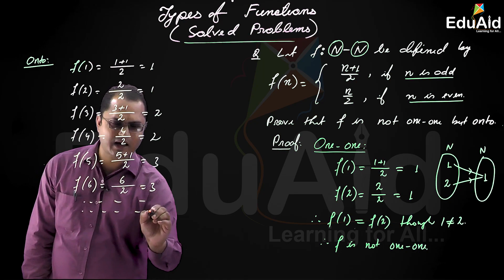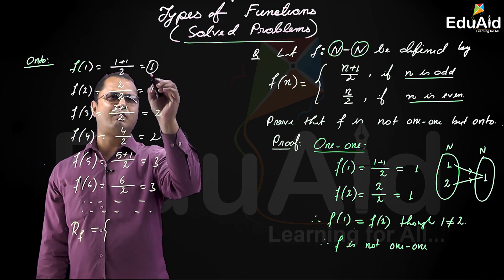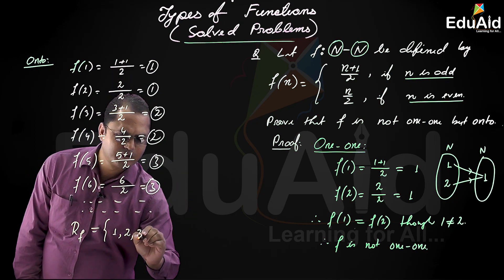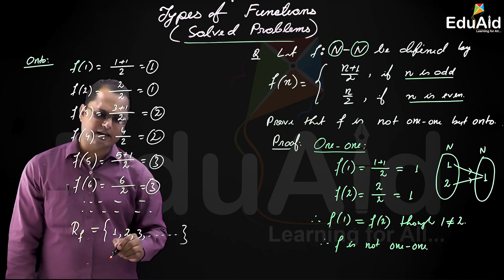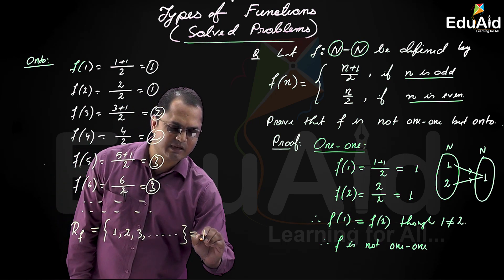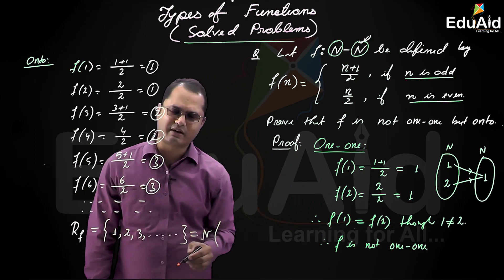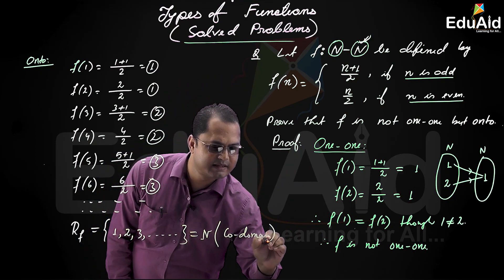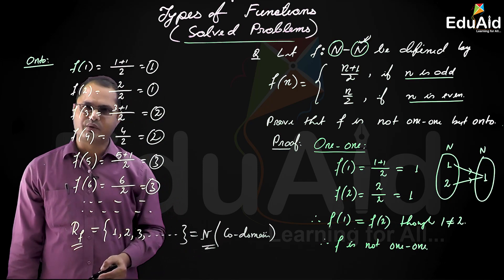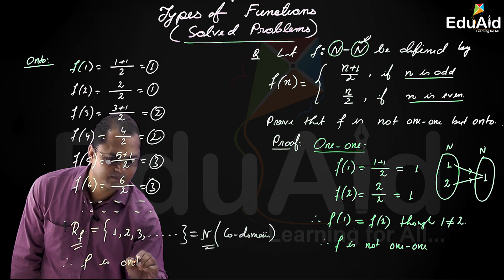The range of f means the set of all images, which is {1, 2, 3, ...} — without missing any natural number, we get the set of natural numbers again. So range of f equals the set of natural numbers, which equals the codomain. Since range of f equals codomain, by the definition of onto function, f is onto. Therefore f is onto — hence proved.